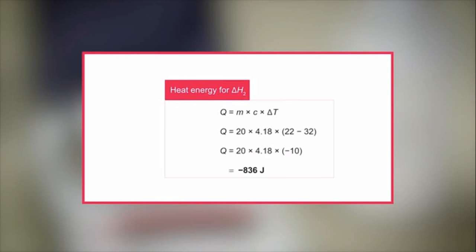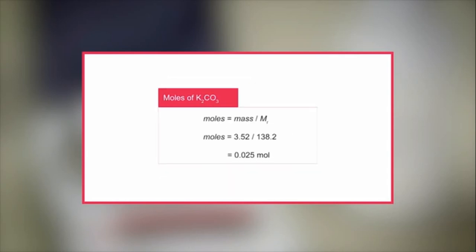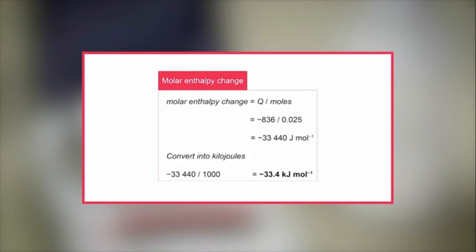Delta H2 is calculated following the same procedure. The heat energy is calculated first. As the temperature of the reaction increased, the reaction is exothermic. Therefore, a negative sign is added to the front of the value. The number of moles of potassium carbonate are calculated, and is used to convert the heat energy into a molar quantity, giving the joules per mole, which is then divided by 1000 to give the answer in kilojoules per mole.